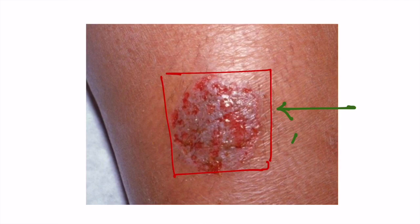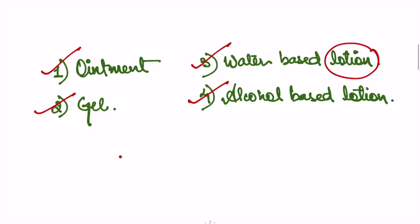So this is a patient showing a wet eczema lesion. The options were: ointment, gel, water-based lotion, or alcohol-based lotion. So how do you approach such a question? Remember that there are a few specific preparations or formulations used for specific conditions — like whenever there is a breach in the superficial layer of the skin or whenever there are cracks.